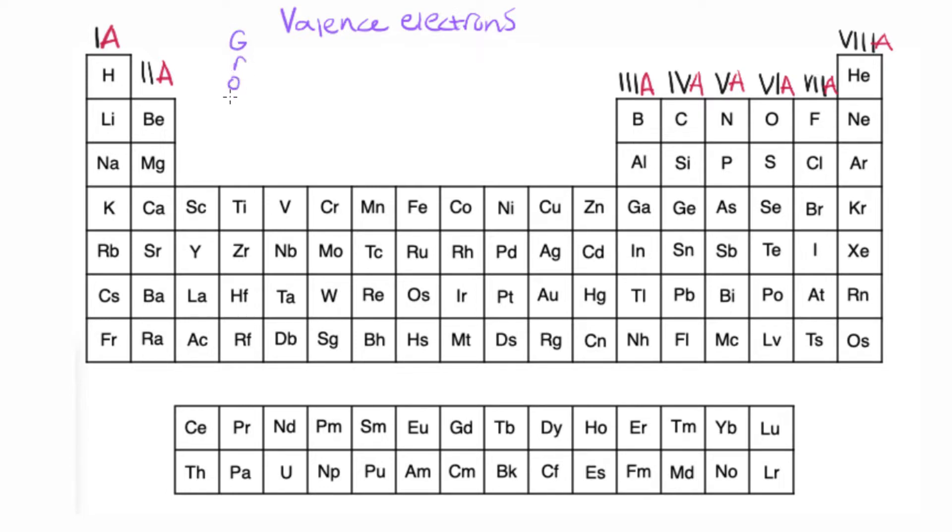So remember, groups are going to be the columns that are going up and down, whereas the periods are going to be the rows that are going left to right.